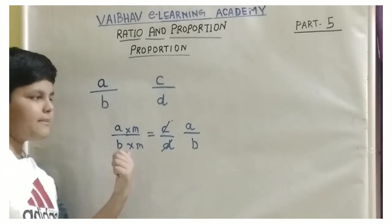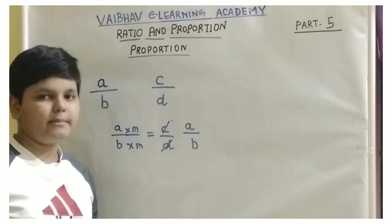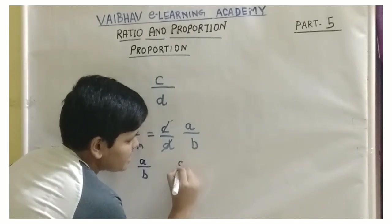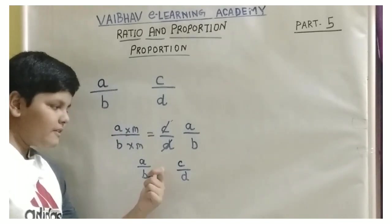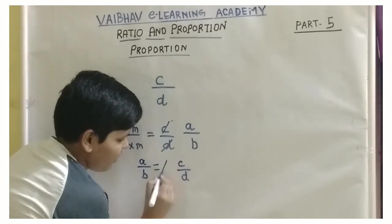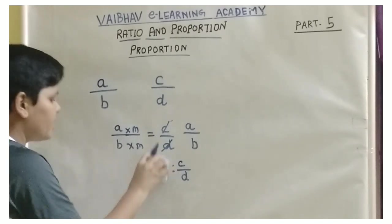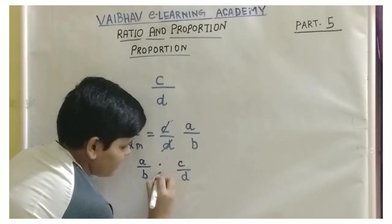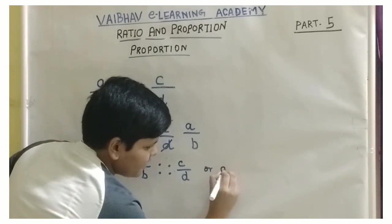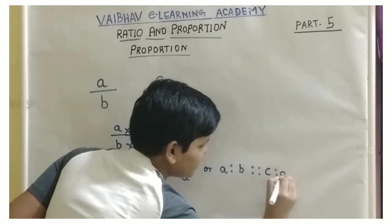So if we get the answer a by b is equal to c by d, where c and d, if simplified, give us a by b, then we can say that a by b is proportional to c by d. What do we put in between? We can either put an equal sign or a double colon. This is read as 'a by b is proportional to c by d' or 'a is to b is proportional to c is to d.'